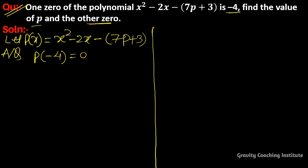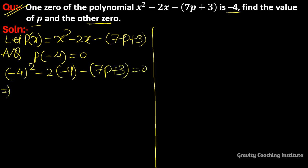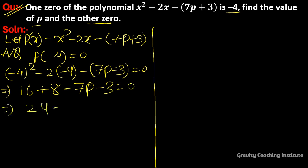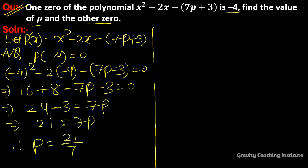Substituting: (-4)² - 2(-4) - (7p + 3) = 0. So 16 + 8 - 7p - 3 = 0. That gives 16 + 8 - 3 = 21, so 21 - 7p = 0, meaning 21 = 7p.